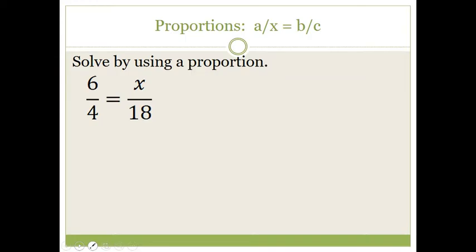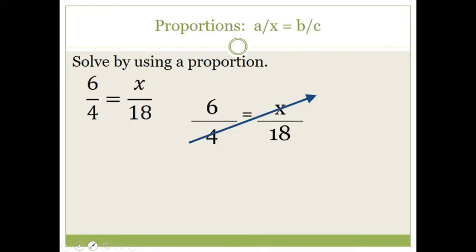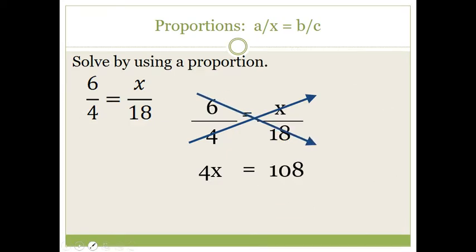Let's solve another proportion where x is in a different location. It doesn't matter — we do the exact same steps every time. We multiply the cross products and set them equal: four times x is four x, and six times eighteen is one hundred eight. Dividing both sides by four, we get that one hundred eight divided by four is twenty-seven.